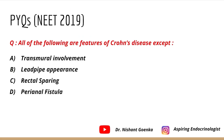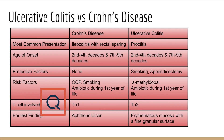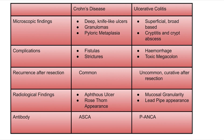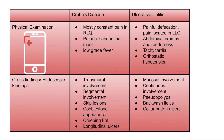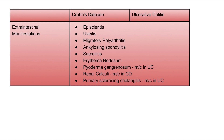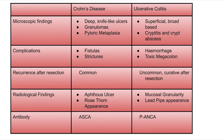Going back to the question — 'All of the following are features of Crohn's disease EXCEPT' — the answer is lead pipe appearance, which is a finding in ulcerative colitis. There are many potential exam questions from these tables, including T-cell involvement, gross/endoscopic findings, and antibodies. Take a screenshot of these tables to revise before the exam. Keep studying and keep revising!